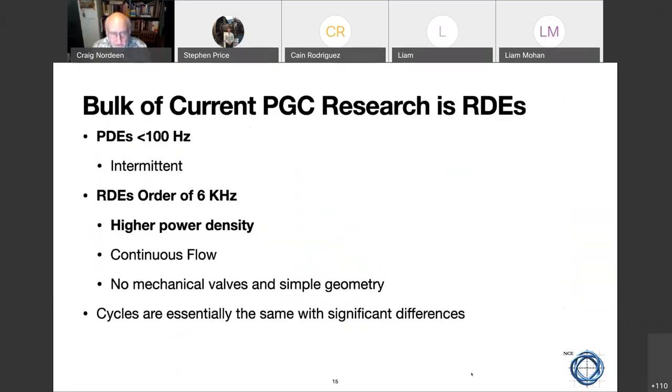So the bulk of the current pressure gain combustion research right now is RDEs. And the reason is that the PDEs, they can't operate very well at frequencies greater than 100 hertz. The one you just saw each tube was running at about 20 hertz. They have to be filled. There's a cycle involved with filling and exhausting. The RDEs are on the order of six kilohertz. And what it means is that there's a higher power density and that's got everybody's attention right now. The flow is continuous. There's no mechanical valves, simple geometry. The cycles are essentially the same with some significant differences.